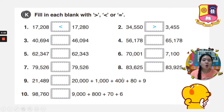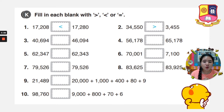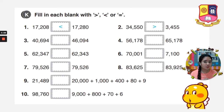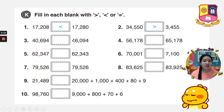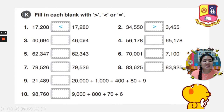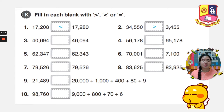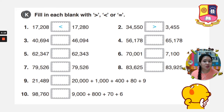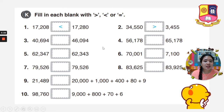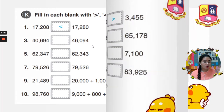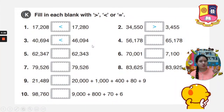Let's go to number 3. We have 40,694 and 46,094. Let's compare: 4 and 4, the same; 0 and 6 — which one is bigger? That is 6, so the answer will be 46,094. The mouth is pointing there.